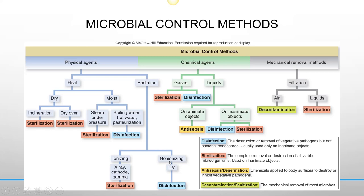Chemical agents can be gases or liquids and exist at different levels of effectiveness. There's also mechanical removal — just physically removing microorganisms — predominantly through filtration, where you can filter the air or filter liquids. These are the definitions for the terms just covered.